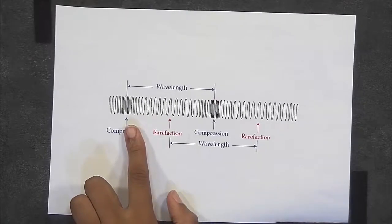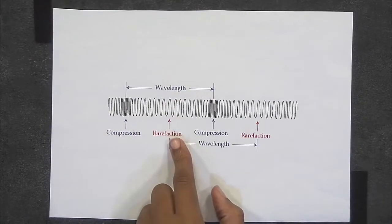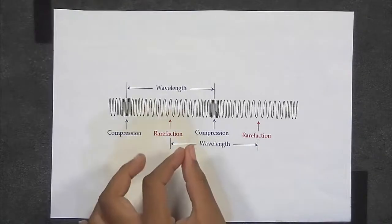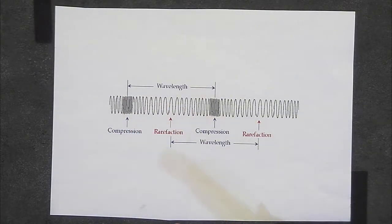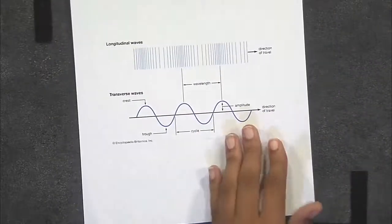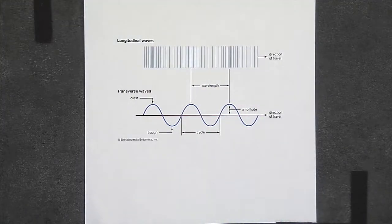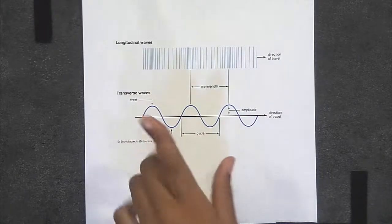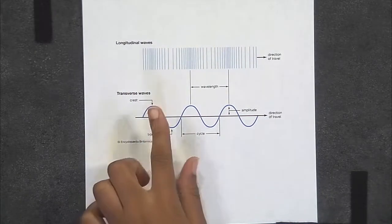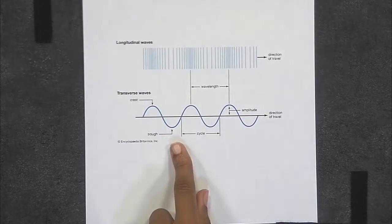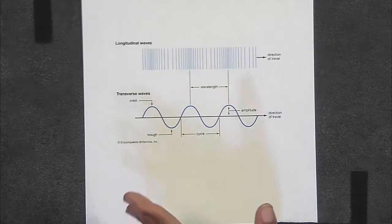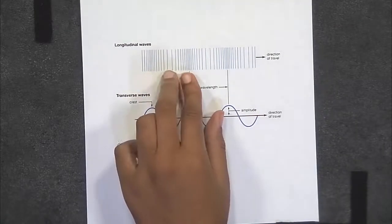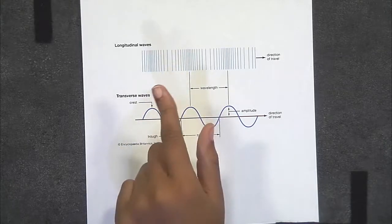Compressions are the regions that are compressed or squeezed together, and rarefactions are those regions that are stretched out or spread apart. You can also describe these regions as crests or troughs, as seen in this image of a sine wave. The crest, which is the top peak of the wave, is the compression, and the trough, which is the bottom peak of the wave, is the rarefaction, which is the stretched out region.